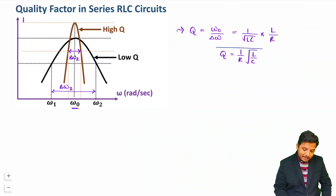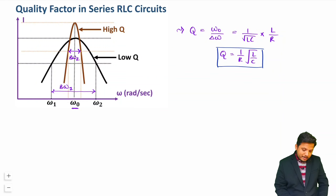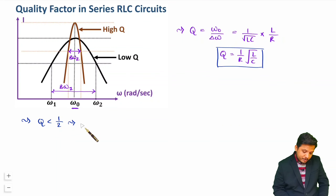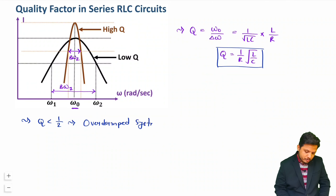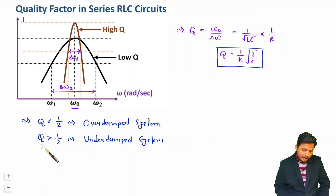This is a very essential formula that you must remember for solving questions. This is the basic formula of quality factor for a series RLC circuit. Now there are a few essential things I would like to explain regarding quality factor. If quality factor is less than half, you can say the system is an over-damped system. If quality factor is greater than half, the system is under-damped. And if quality factor equals half, the system is critically damped.